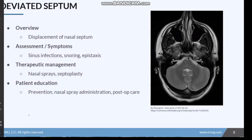Starting with deviated septum — this is super common. There's actually a pretty good chance that you may have some degree of septal deviation, as it affects a large number of people, like 80% of people. It can either be present at birth or as a result of facial trauma. A deviated septum is just a displacement of the nasal septum, and it's considered the most common cause of nasal obstruction.